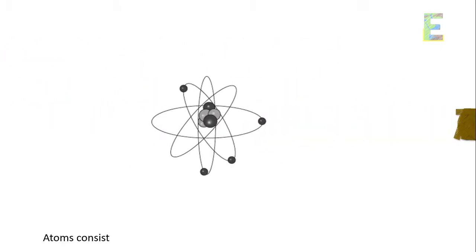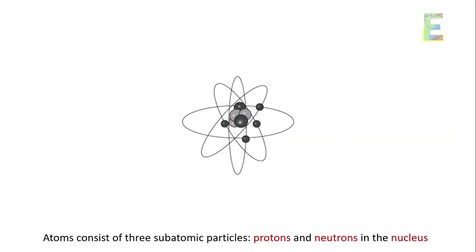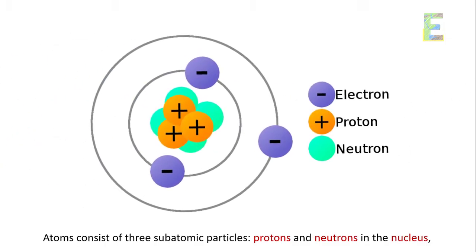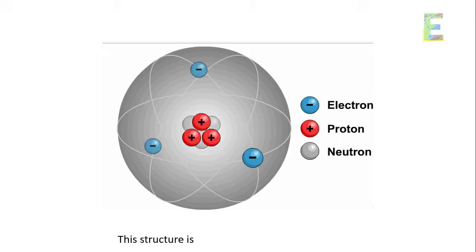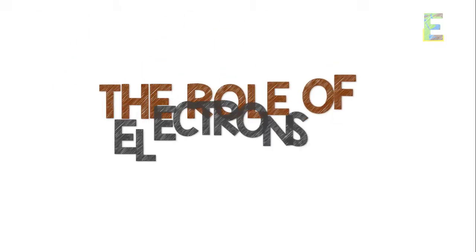Atomic structure. Atoms consist of three subatomic particles: protons and neutrons in the nucleus, and electrons whirling in orbit around it. This structure is the key to understanding matter.